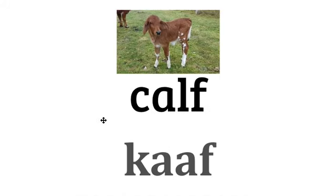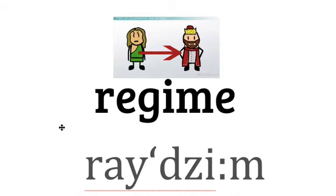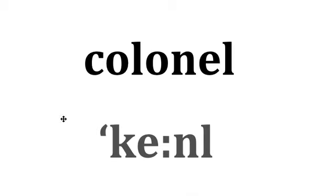You can see the picture — it is the young one of a cow and we call it 'calf.' Next is a French word that sounds beautiful; let's pronounce it correctly: 'niche.' After that we have 'regime' — practice saying 'regime.'